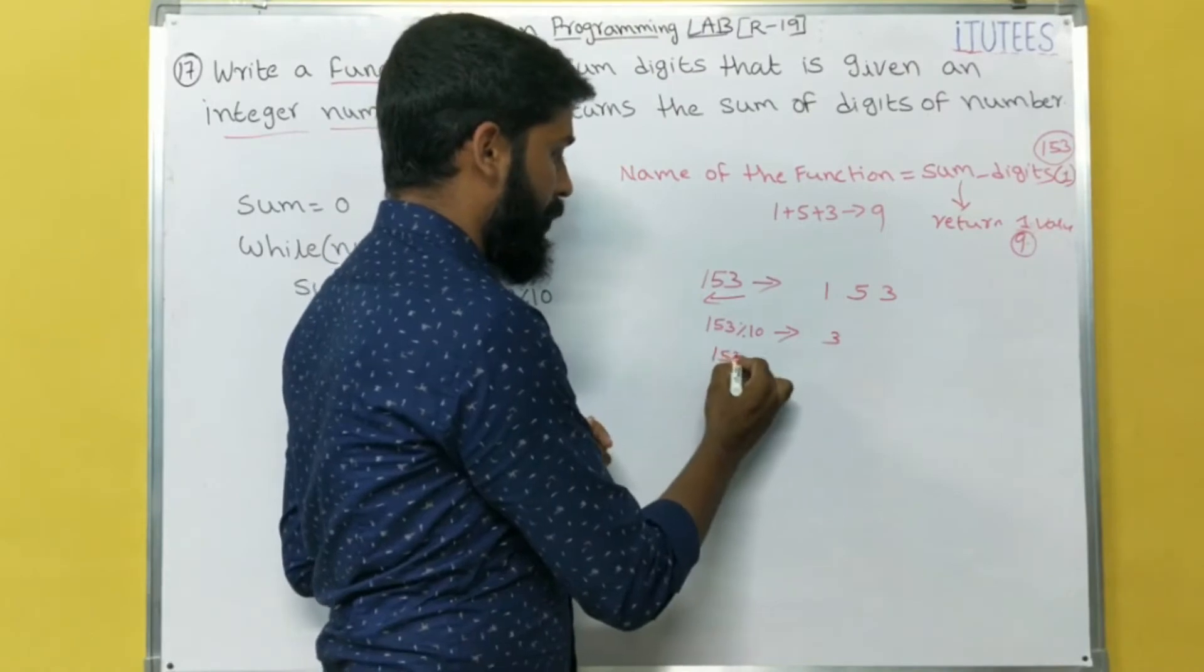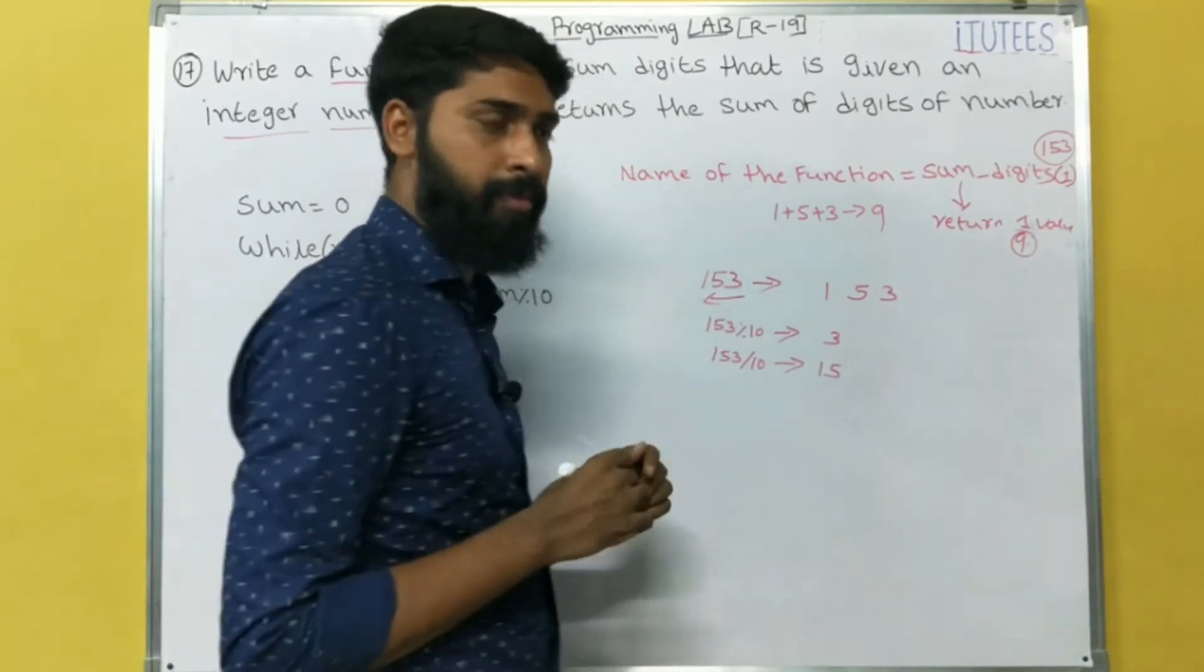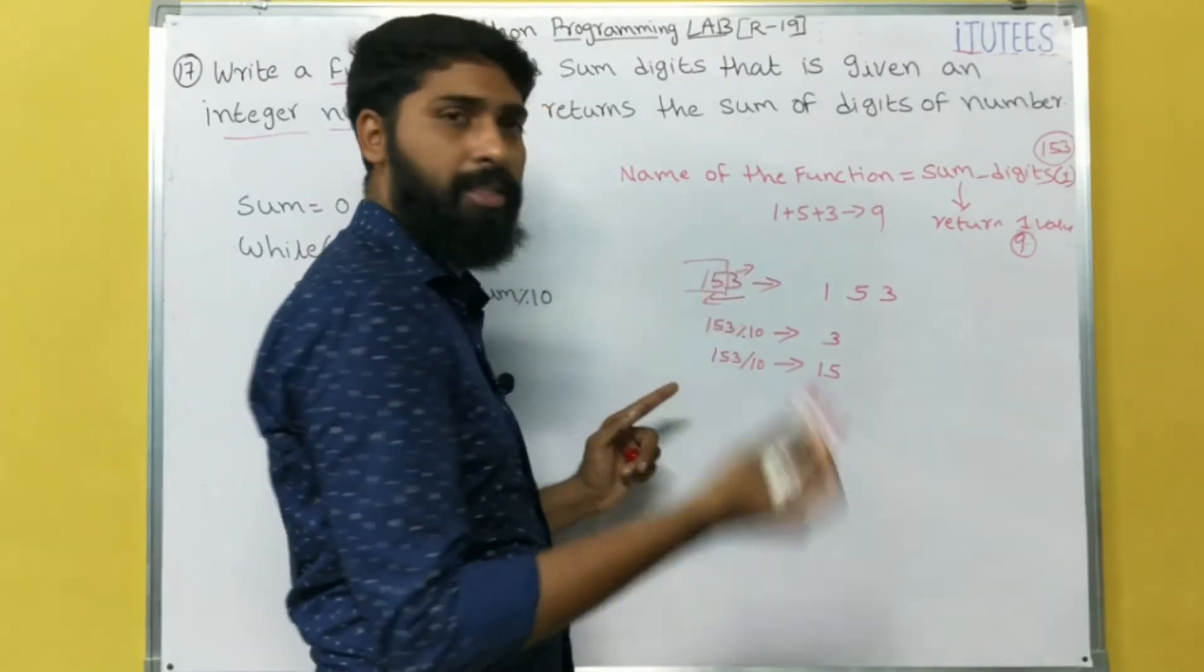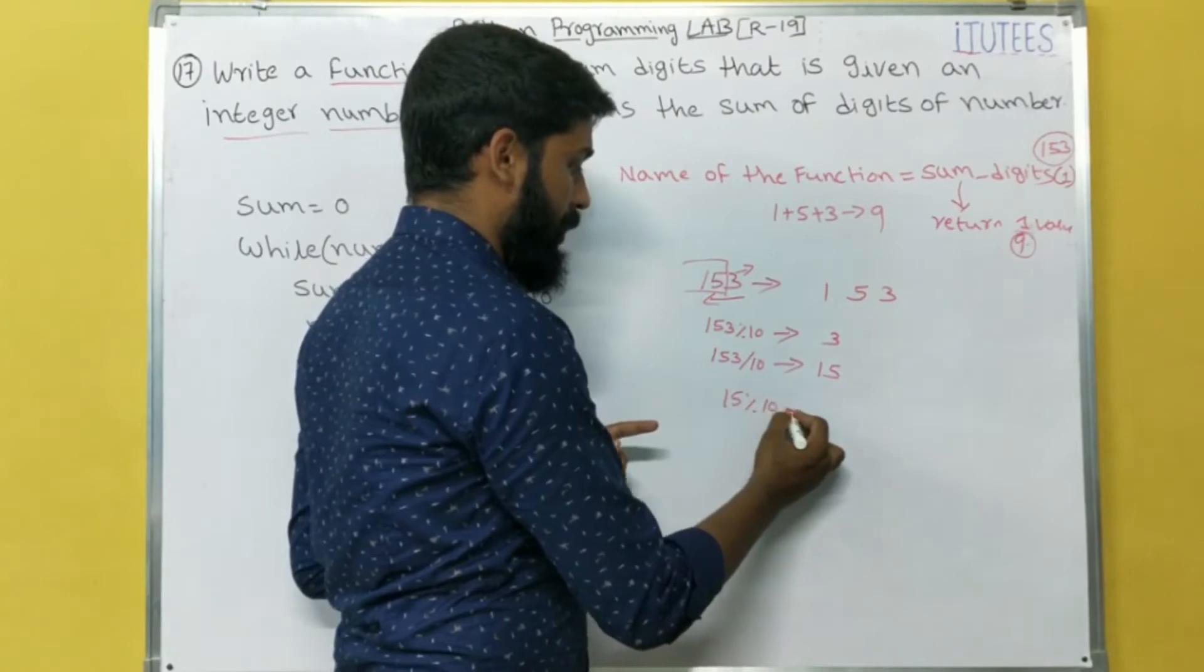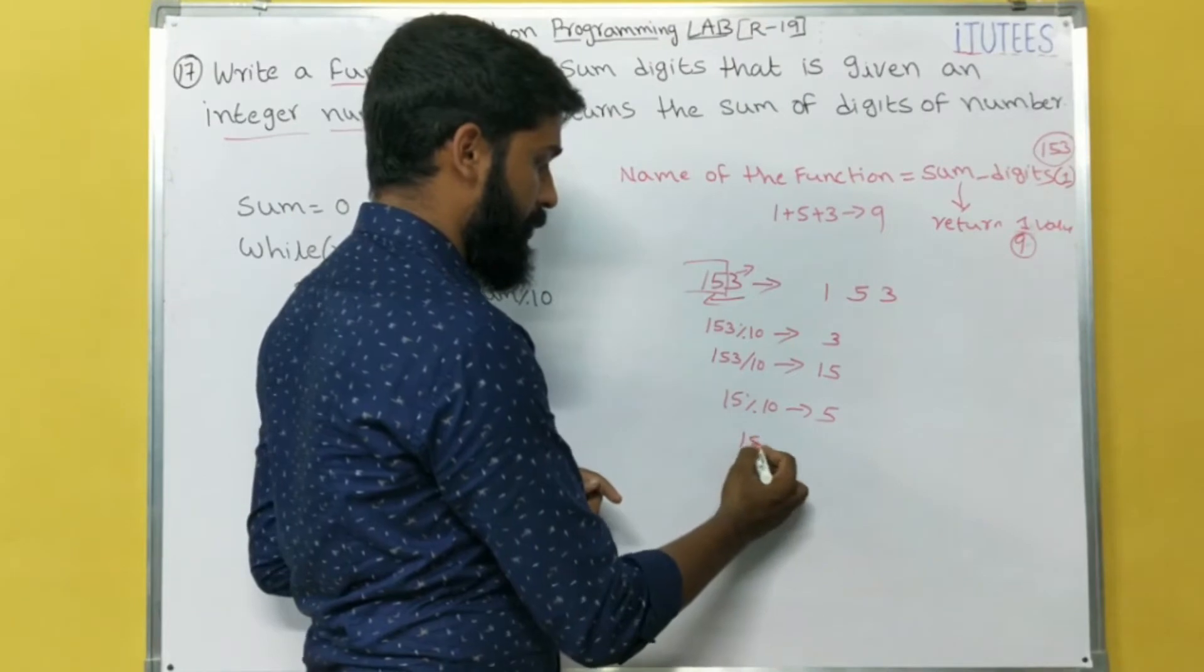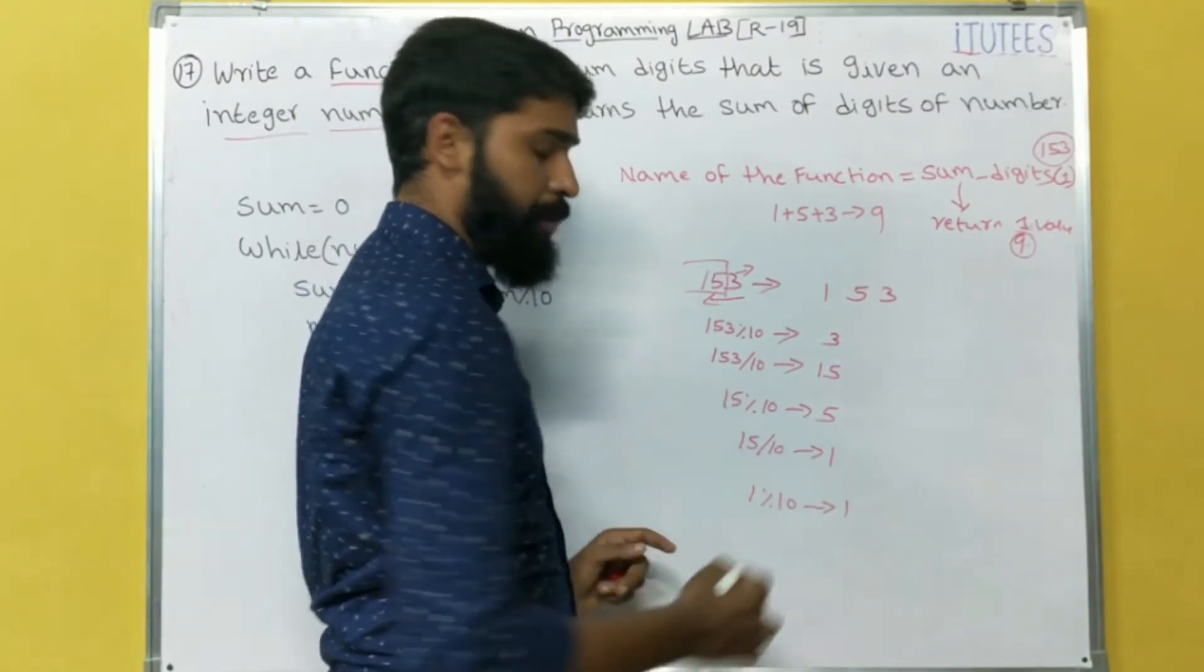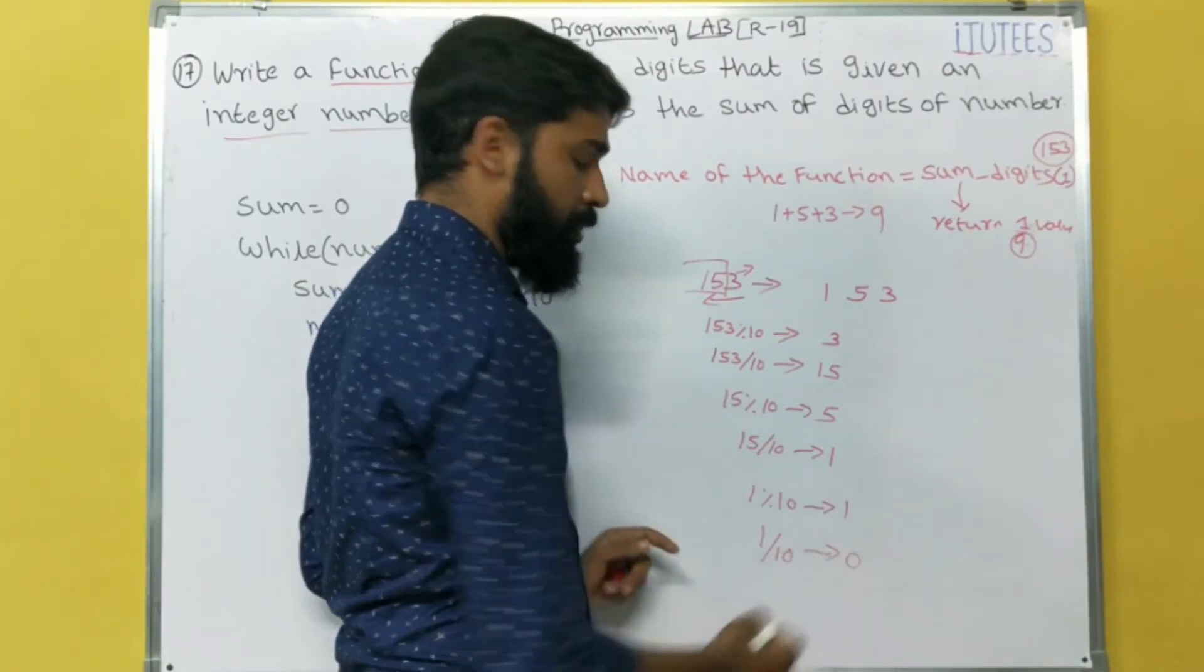And we can perform 153 by 10. So that means, the remaining is 15. That means, for 153, what is the remainder? The last one is the remainder. The remaining part is next number. That means, now I am taking 15 percentage 10. What is the remainder? 5. And what is the number? 15 by 10. That means, 1. So next, I am taking 1 percentage 10. What is the remainder? 1. Now, 1 by 10, that equals to 0.